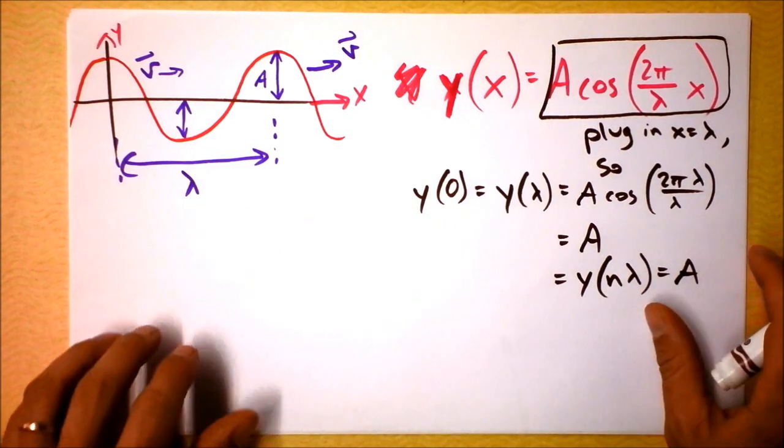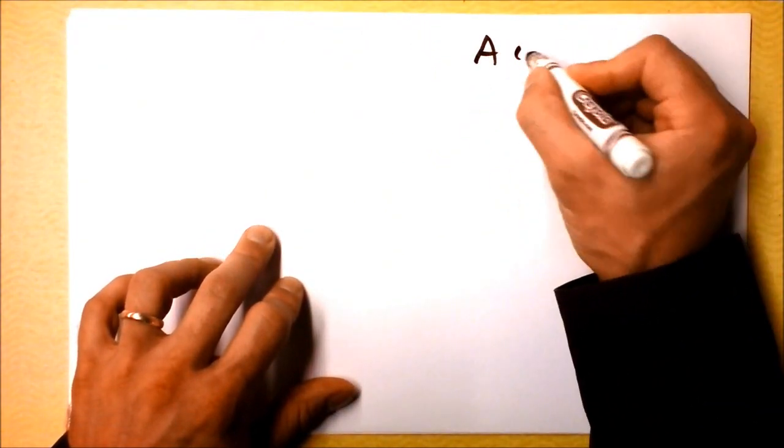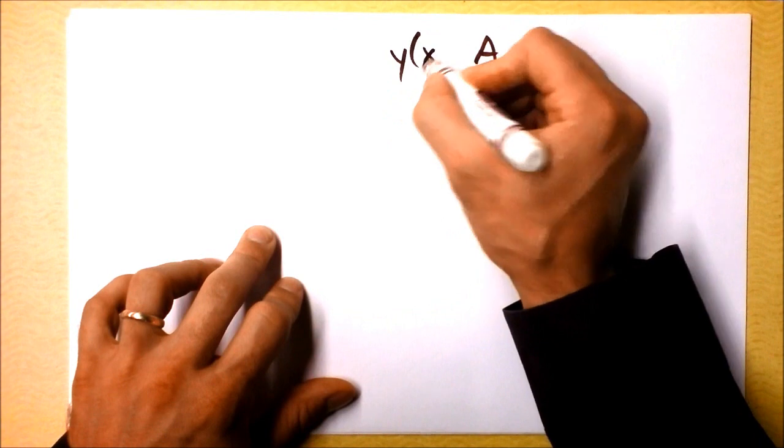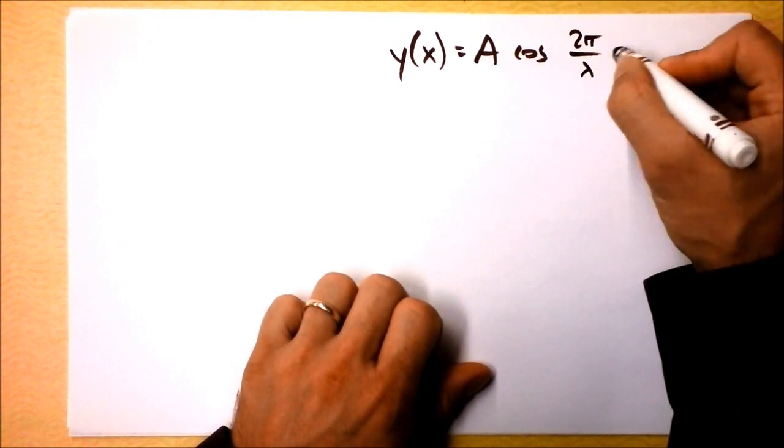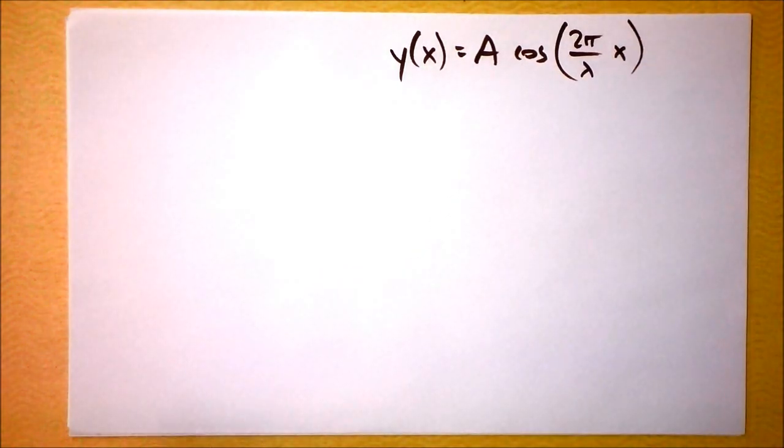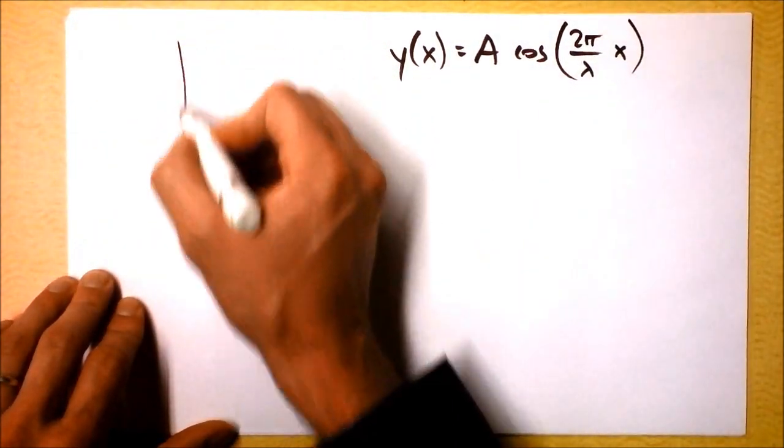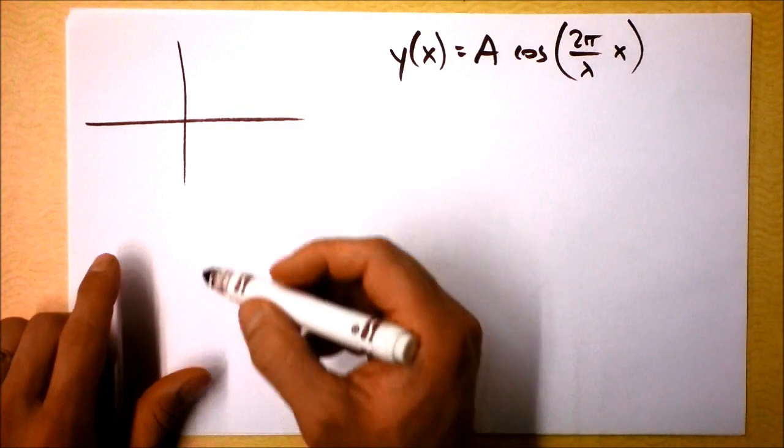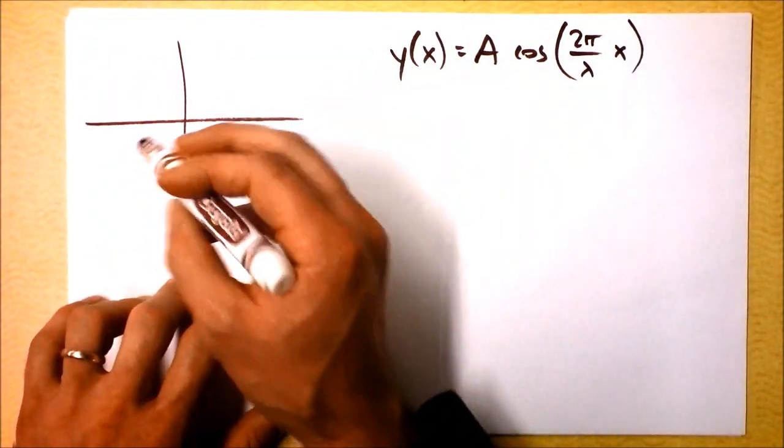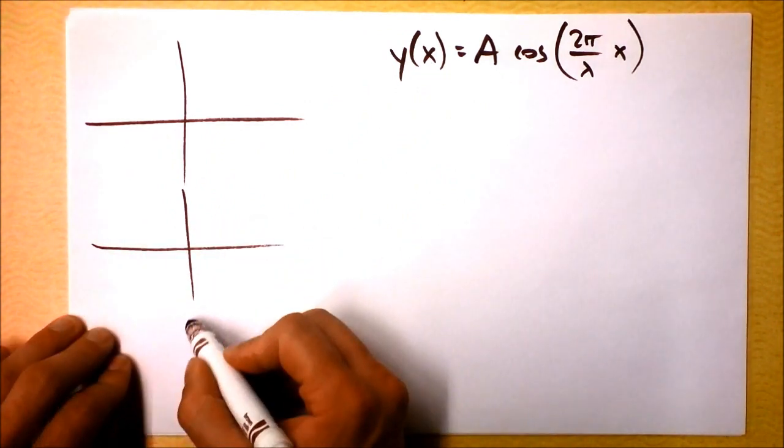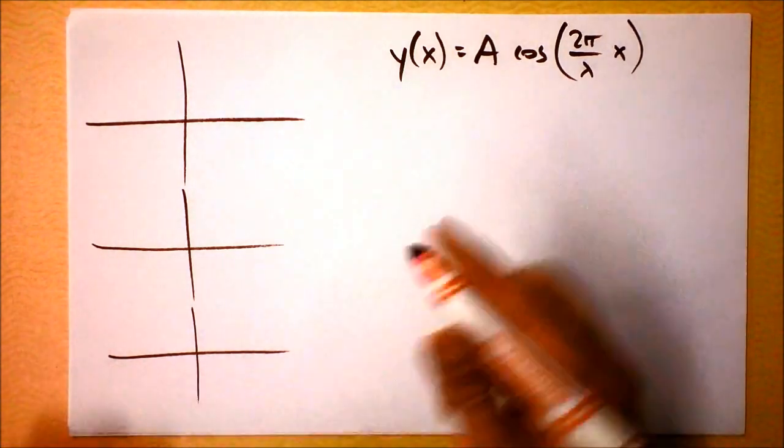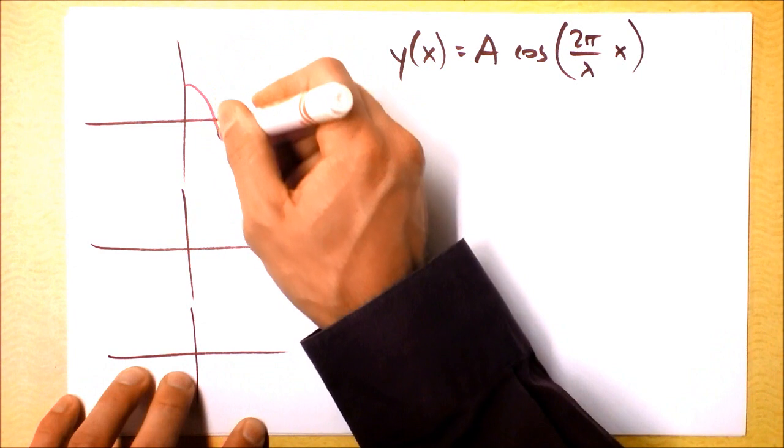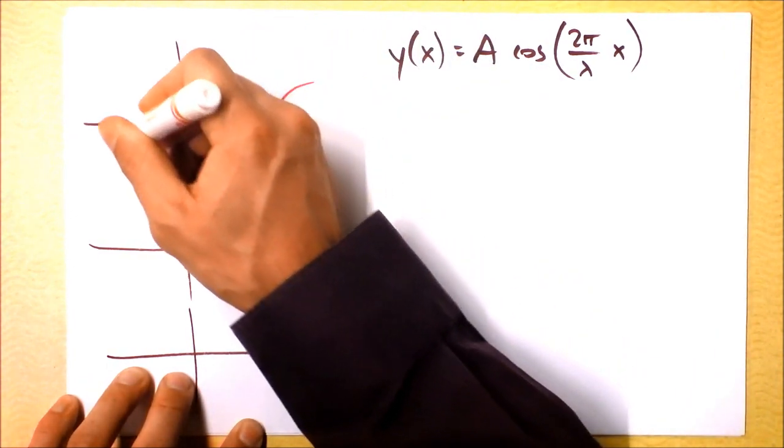So let's take this general form here, A cosine of 2π over lambda times position, and think a little bit about what's happening as a function of time. I'll write this down here again: A cosine, this is the position of the rope as a function of the position of the rope, 2π over lambda times x. Now I want to propose that we sketch some ropes at various times in the evolution of the wave. We said the wave was moving to the right, so I'm going to show you the wave at time equals 0.